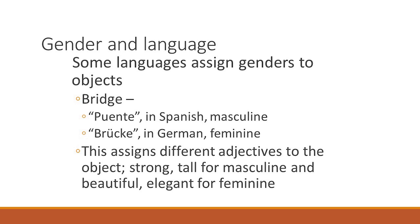So when describing a bridge, different languages may use different words. In Spanish, words like strong and tall may be used to describe a bridge because it is considered masculine. Meanwhile in German, words like beautiful or elegant may be used because it is considered feminine. Based on these examples, you can clearly see how language is very much influenced by culture and culture is very much influenced by language.